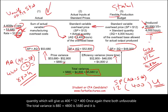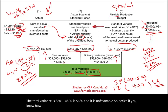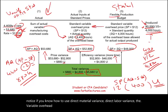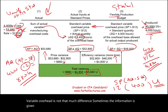Notice that if you know how to use direct material variance and direct labor variance, the variable overhead is not that much different. Sometimes the information is given indirectly — you have to slow down and know what you are given. Practice, practice, practice.